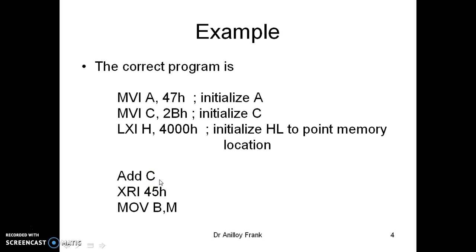The first instruction will add the value of C, which is initialized, with the value of A, which is also initialized. And also the memory M, which is initialized in HL pair at 4000. So, the value of M will be the location 4000 brought in the register B.